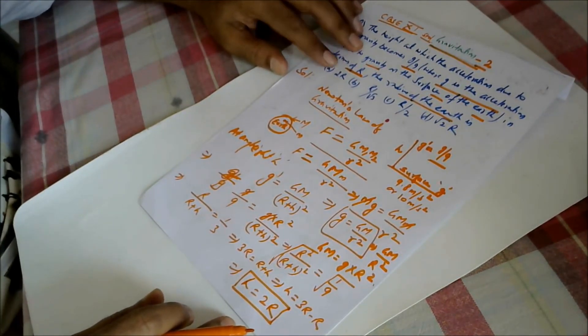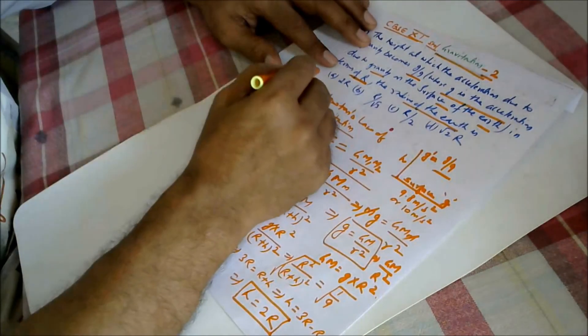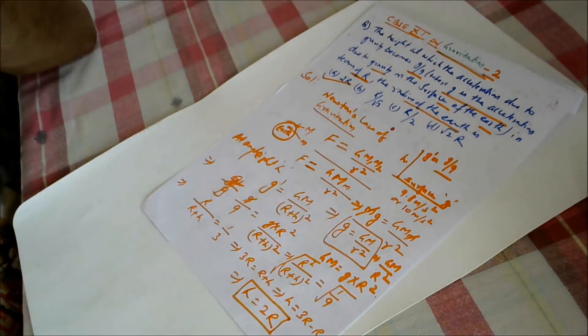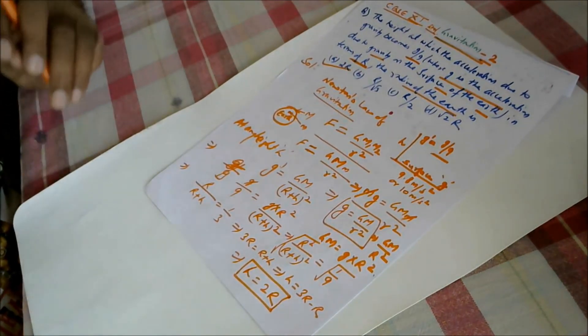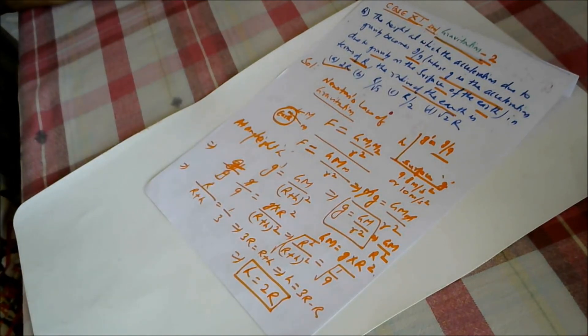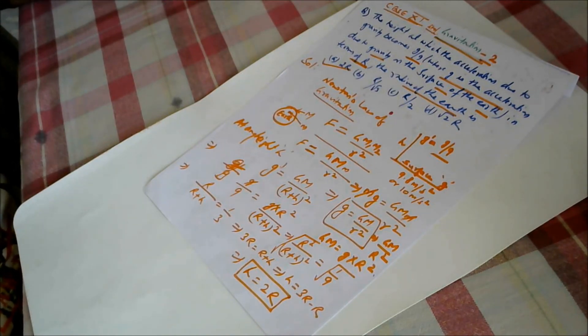There the value of g will become g by 9, so our answer is option A. I hope you all would have understood. Thank you. I will take only one question in one video, and then next video again one question. Thank you.